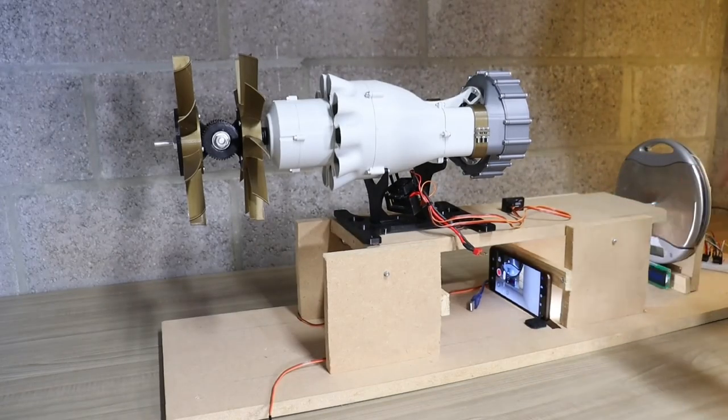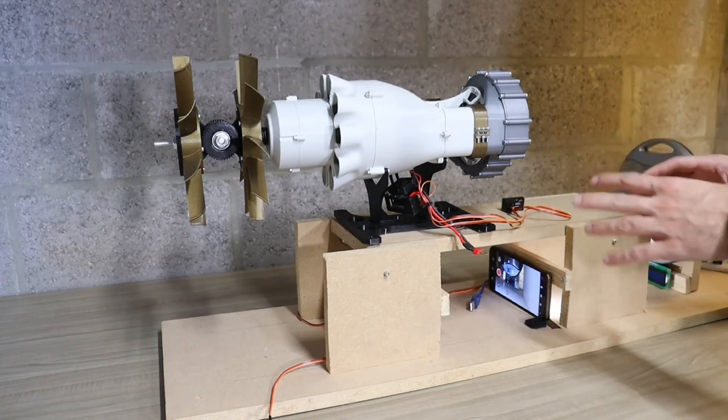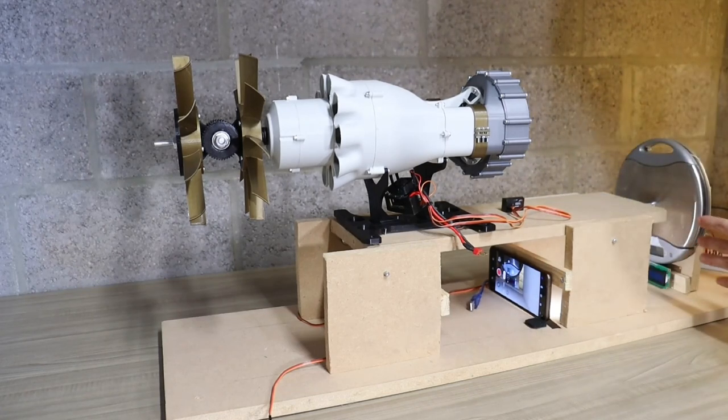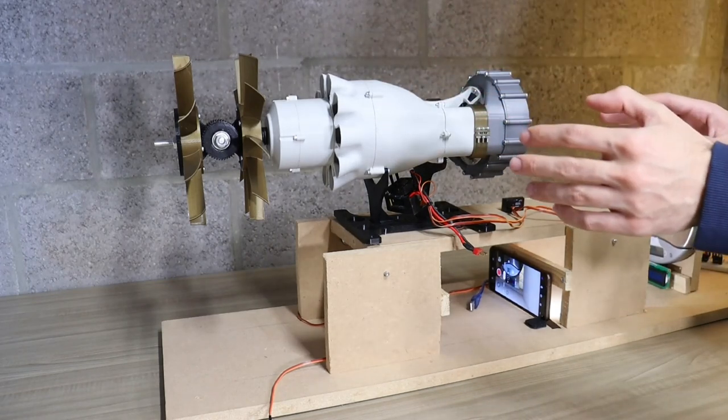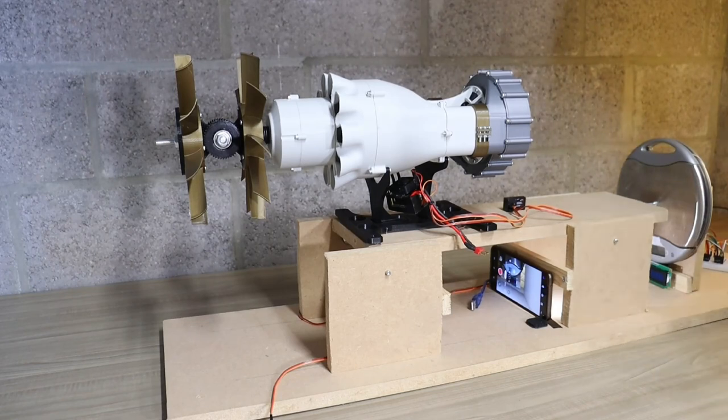So I got the whole thing set up, got the jet on top of the thrust stand. The phone is recording the scale. The scale is going to tell us what thrust we're getting out of the counter-rotating propellers. So yeah, let's connect the battery and let's find out.